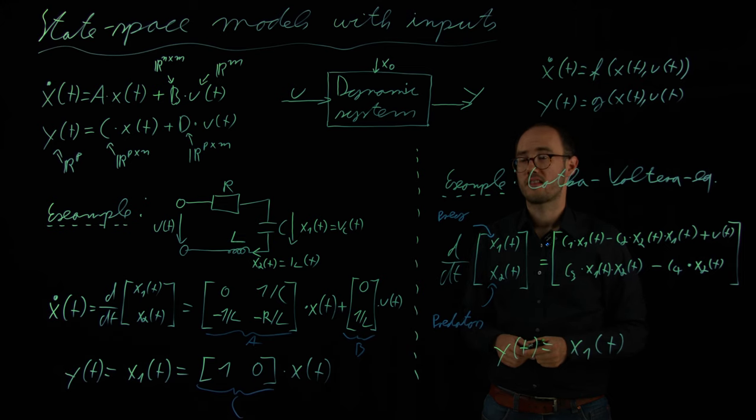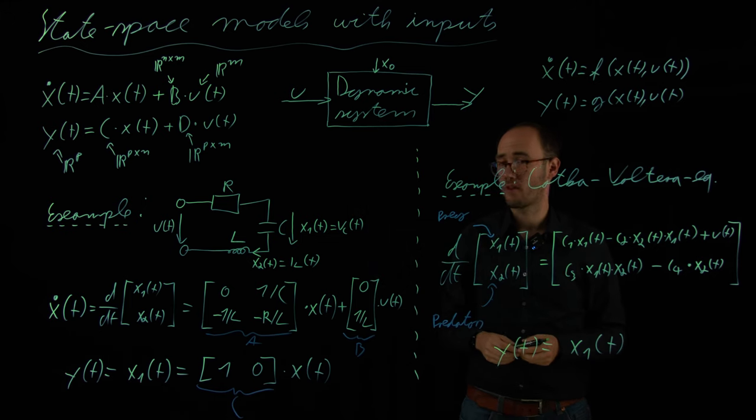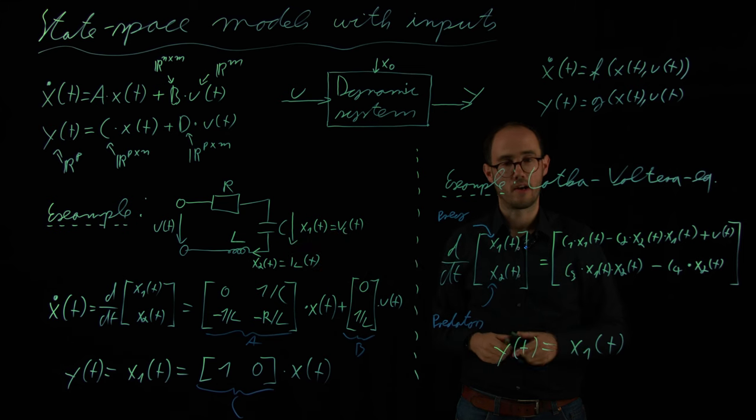So, we have therefore seen that the systems with inputs and outputs are very important for many real-world applications like engineering or biology and therefore they also make a very important entry point for data-driven system identification as we will see in the subsequent videos. Thank you.